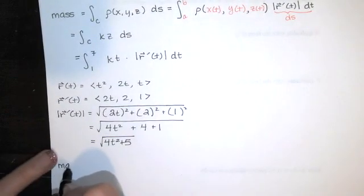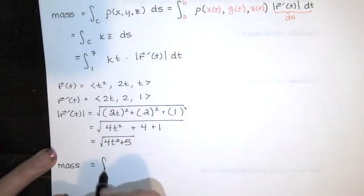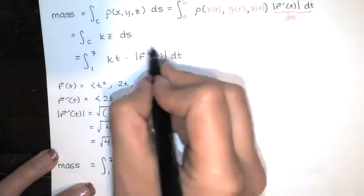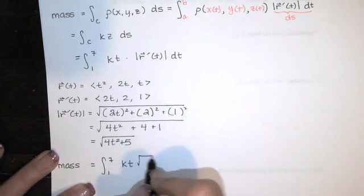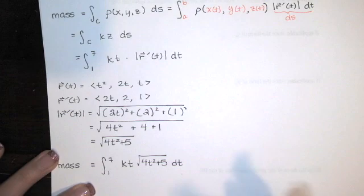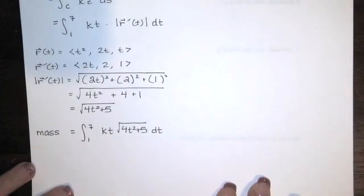So our mass integral turns out to be the integral from 1 to 7 of K times T times this, which I can replace with the square root of 4T squared plus 5. And then we just look at that, like a calc 1 integral, and we say to ourselves, how do we evaluate that?